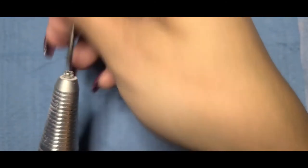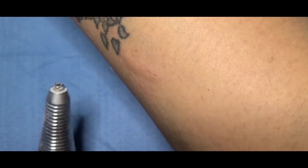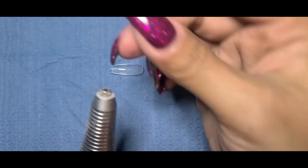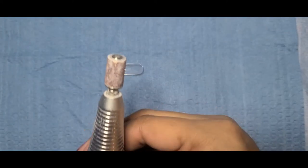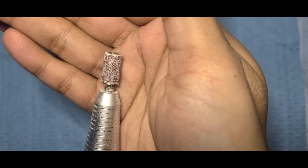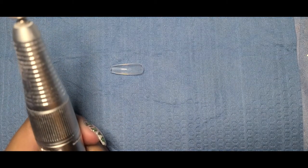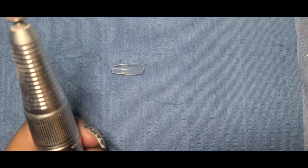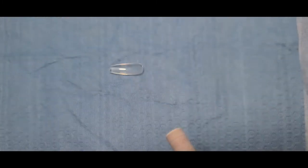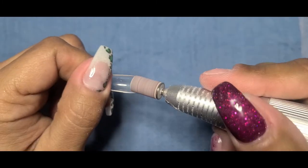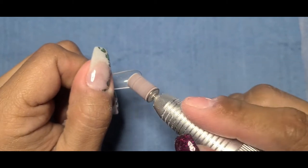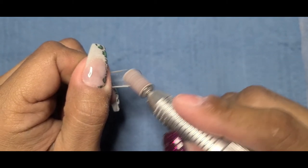So what I'm going to do right now is take my mandrel drill bit with the sanding band or arbor band, and I'm actually going to etch the inside of my full coverage tip. Whenever you're etching your tip, you just want to focus on the area in which the tip itself is going to meet your natural nail bed.